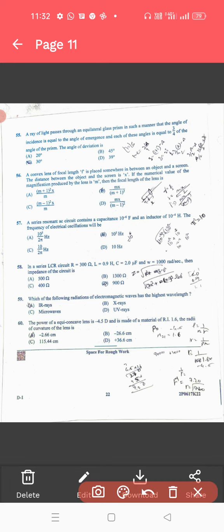Then, 55, area of light. For this, the correct answer is 30. 56, a convex lens. That is, MX divided by M plus 1 whole square. So, that is, correct answer is B.